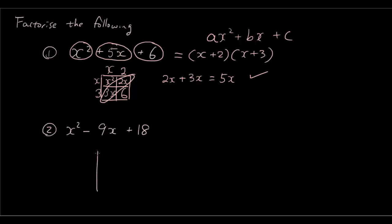Okay similarly we are going to do that to this question. So we put the first term which is x squared in the top left, the last term which is 18 in the bottom right. What two terms multiplied together to give you x squared? x times x. What two terms multiplied together to give you 18? 9 times 2.